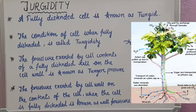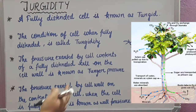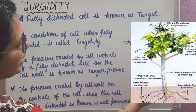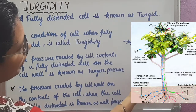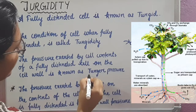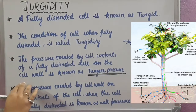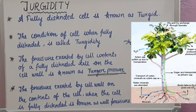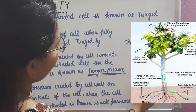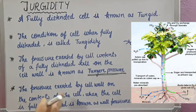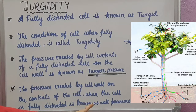The pressure exerted by the cell contents of a fully distended cell on the cell wall is known as turgid pressure. This is a fully distended cell — it starts pressuring the cell wall. This condition is called turgid pressure.